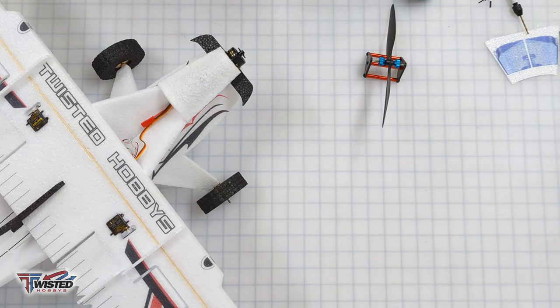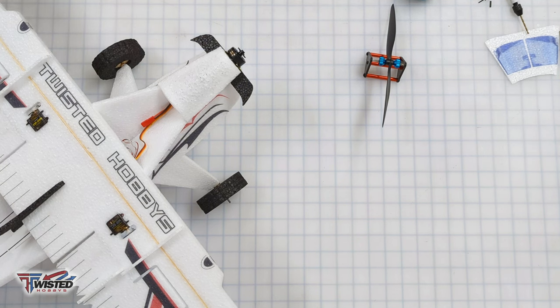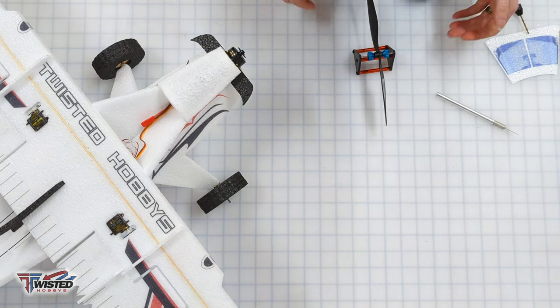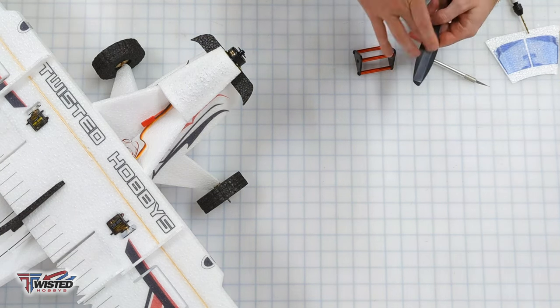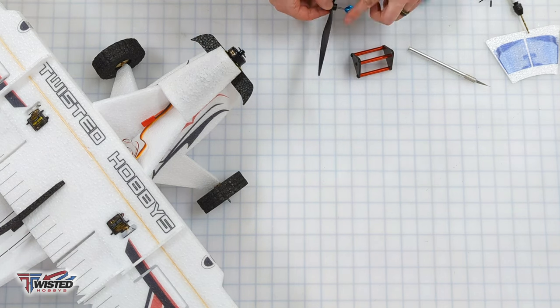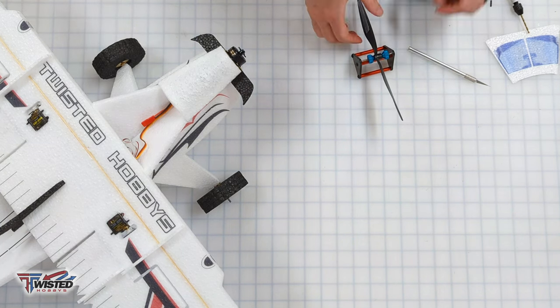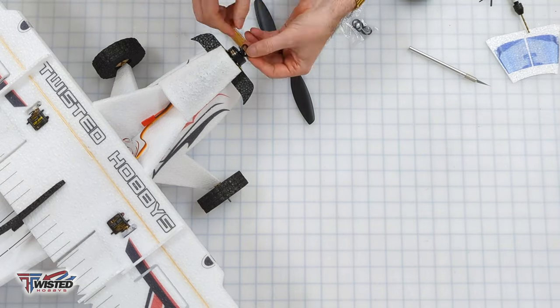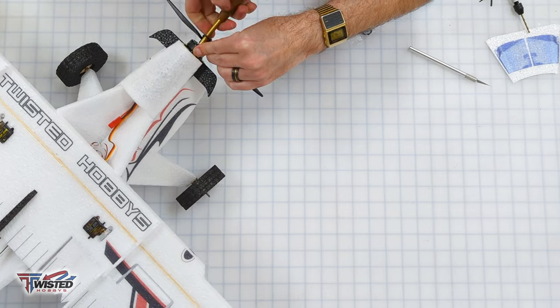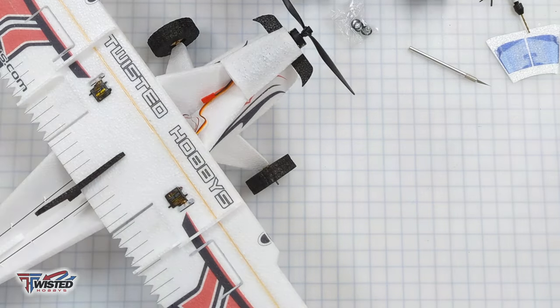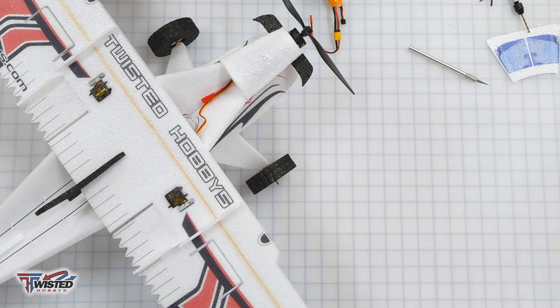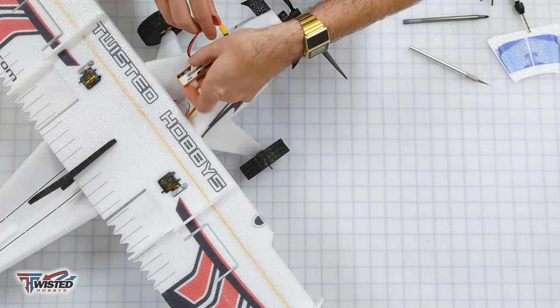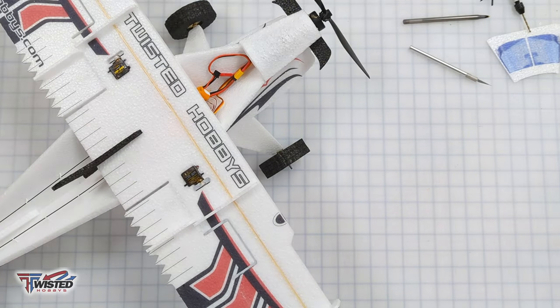The next thing we're going to do is balance our prop. And I have to admit this is the first prop that I've balanced. And it was pretty straightforward, pretty easy. Just put some tape on the back side of it, trim it as you need to in order to get it balanced. I never thought that this was a big deal until I balanced the propeller and was able to compare it with an unbalanced one on another model. And it is a world of difference. So get yourself a prop balancer. It is not that hard and does in fact help out.